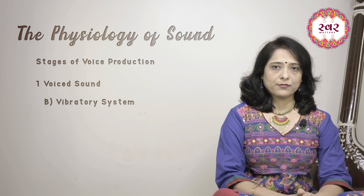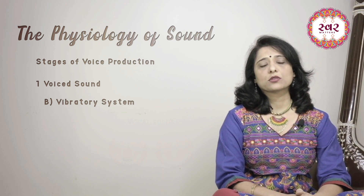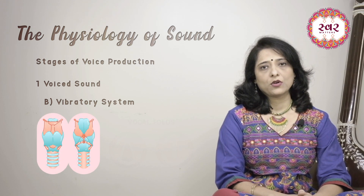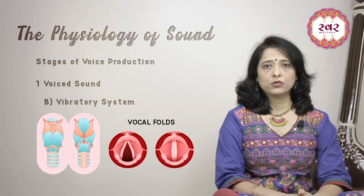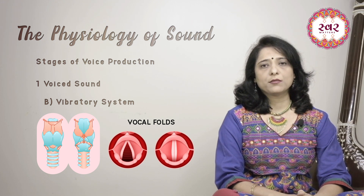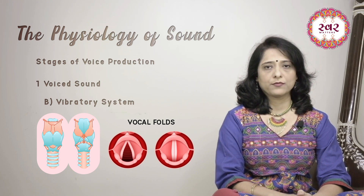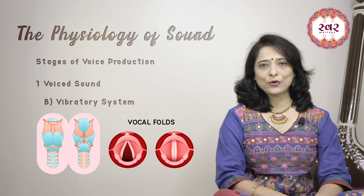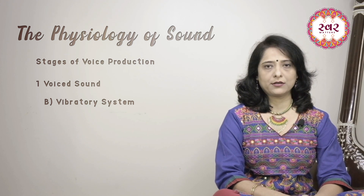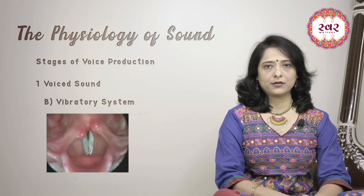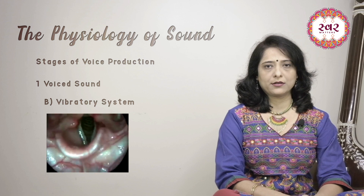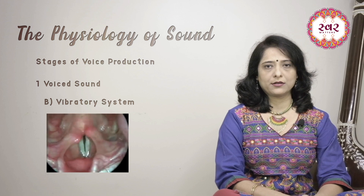Then the vibratory system. Our vocal folds are located in the voice box or larynx. When looking from the front, it looks like this. When looking in an open mouth from above, the vocal folds look like this. When the air passes through the vocal folds, it makes them vibrate, which produces voiced sound. The amount of stretching of the folds and the vibration frequency decides the pitch of the sound at any given moment — high pitch, low pitch, or very soft.